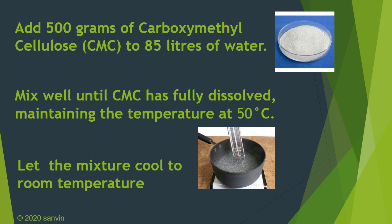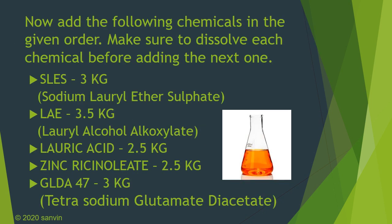Now let the mixture cool to room temperature. After the CMC has fully dissolved, start adding the following chemicals in the given order. Make sure to dissolve each chemical before adding the next one. The first one is SLES, also called sodium lauryl ether sulphate — you will have to add 3 kilos of this. The next one is lauryl alcohol alcoxylate, also called LAE — you will have to add 3.5 kilos. Make sure to mix well.